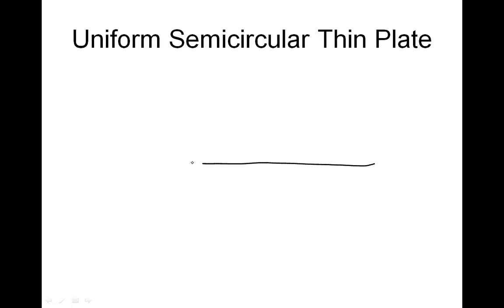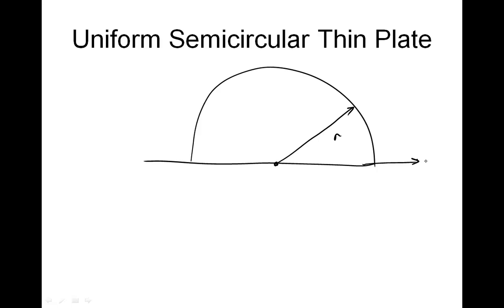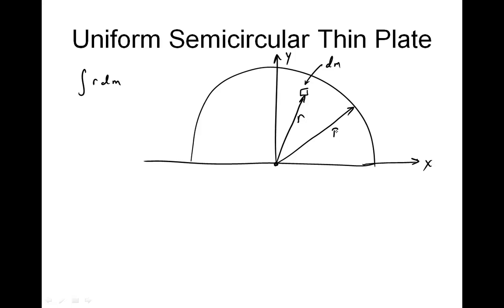Let's find the center of mass of a semi-circular thin plate. There's a semi-circular plate with some radius R. There's the x-axis and the y-axis. I could find a little bit of mass dm here, and that would have an x value and a y value. So I'd have the integral of r dm. Let's change the radius of my plate to capital R, so little r is the position of any one of those little squares, and that's going to have an area dx and dy.